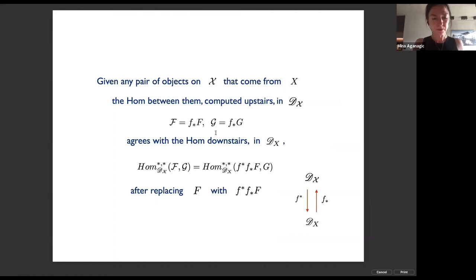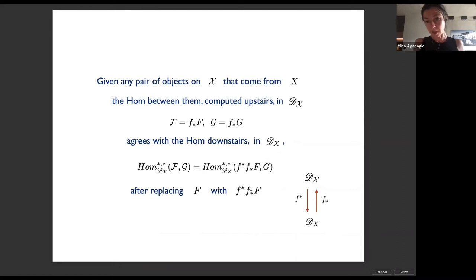Because the spaces are different, the derived categories are not equivalent. Given any pair of branes upstairs that come from branes downstairs, the Homs between them computed upstairs in big X agree with the Homs of the branes they came from downstairs on small X, provided you replace the brane F with the brane obtained by taking it up and pushing it back down — that's where the adjoint functors come in.